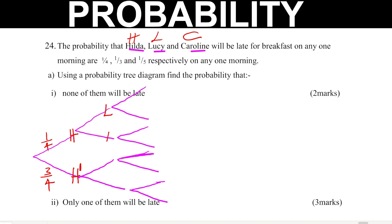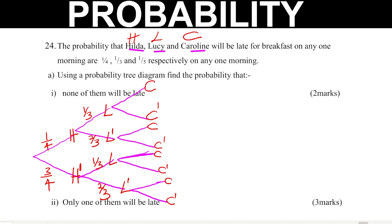The second branch is for Lucy: being late (L) and not being late (L prime). For Lucy, the probability of being late is 1/3, so not being late is 2/3. The third branch is for Caroline: being late (C) and not being late (C prime). For Caroline, the probability of being late is 1/5, so not being late is 4/5. That completes the tree diagram.